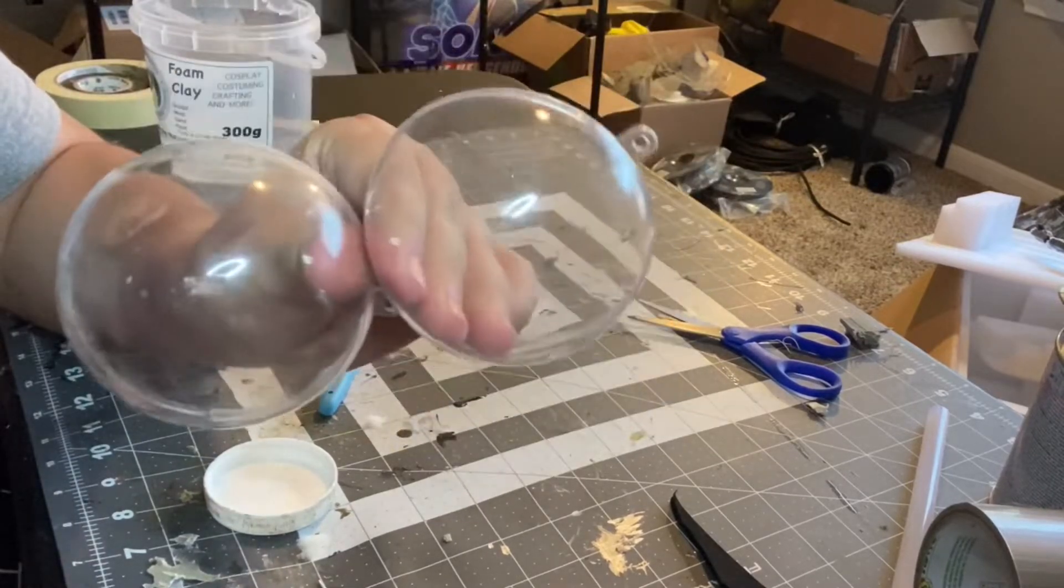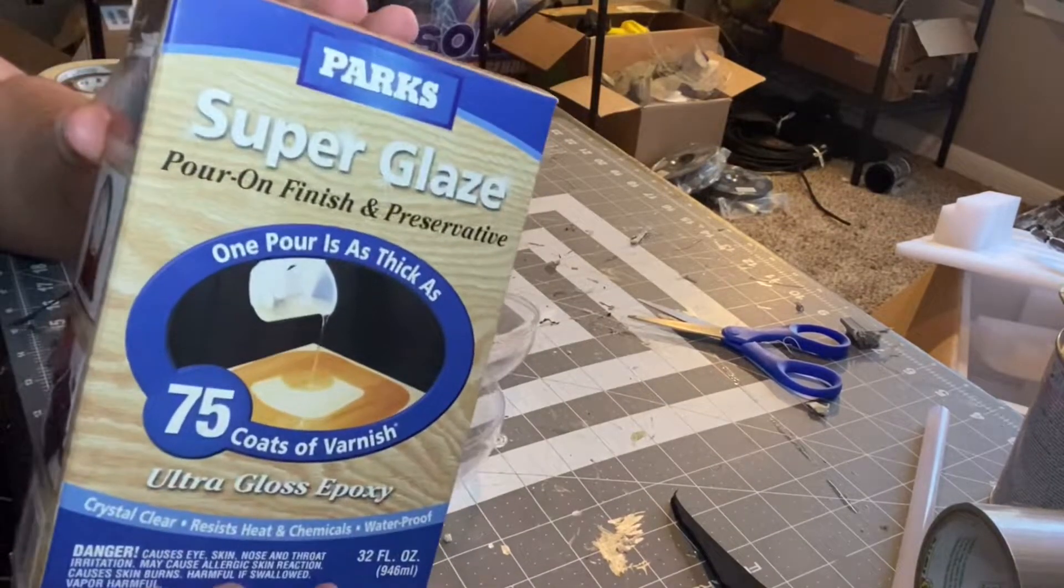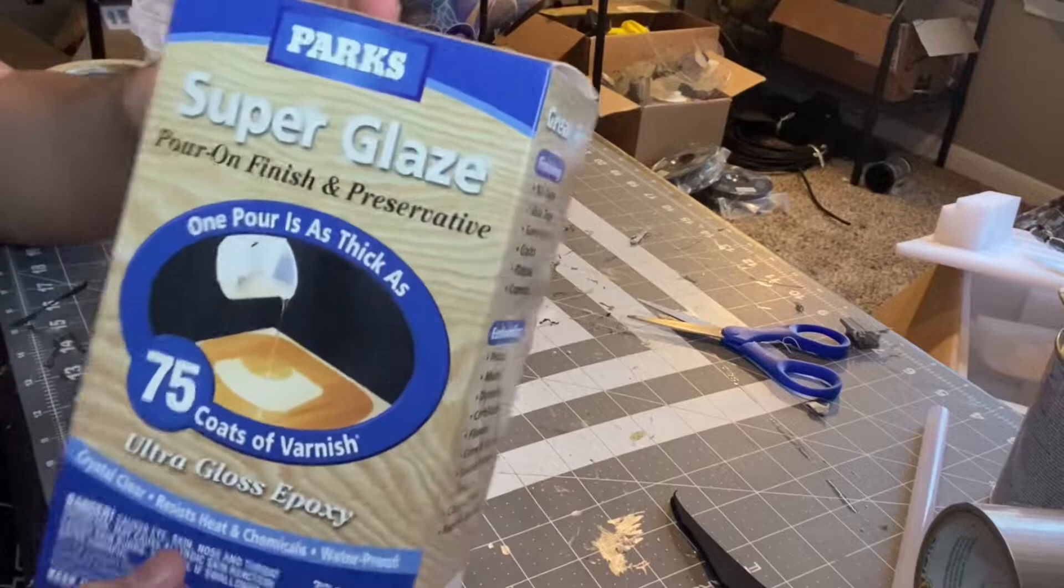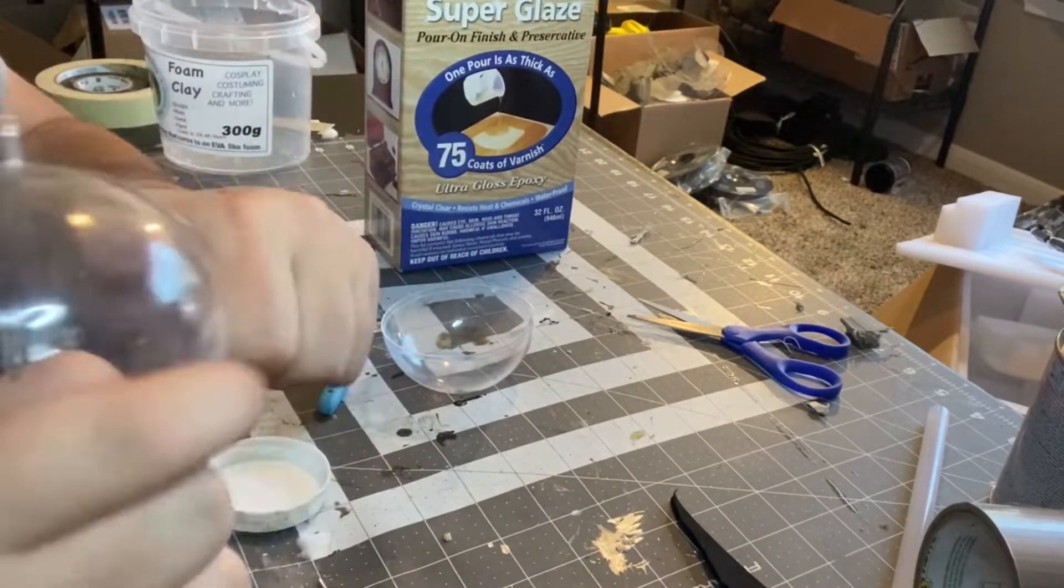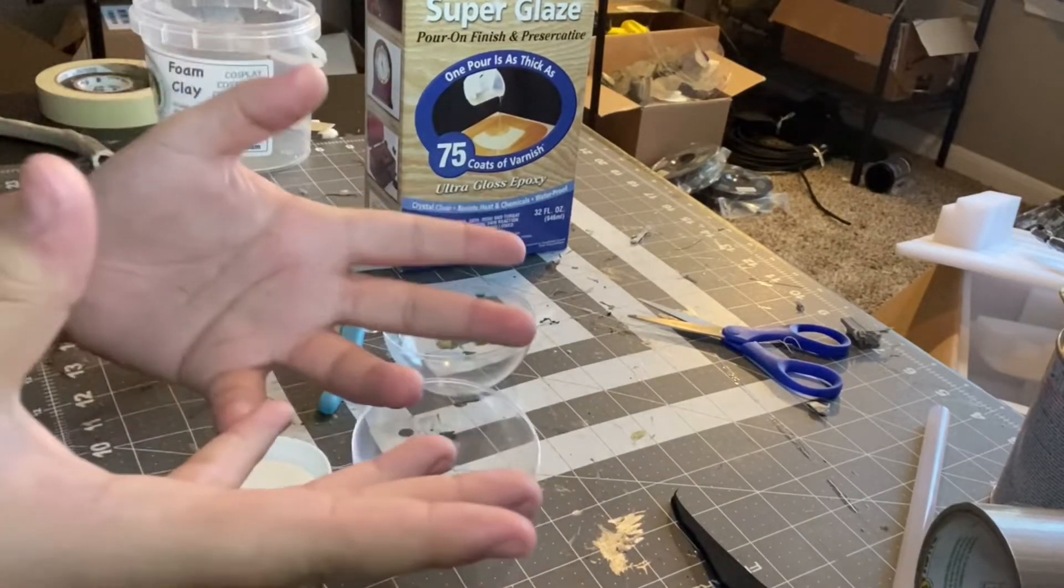So first you'll need these acrylic spheres, or kind of the base material for all this. I'm also using this epoxy, which is basically a two-part resin. I'll be using it as a layer to glue the pupil onto, which the pupil is gonna be a printed part.